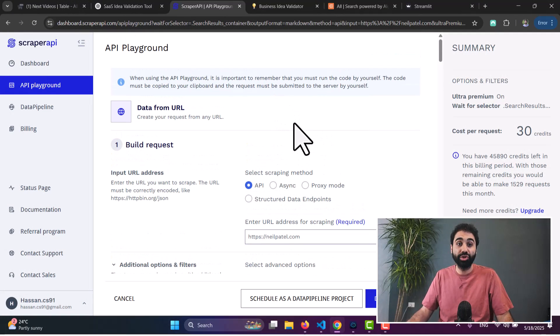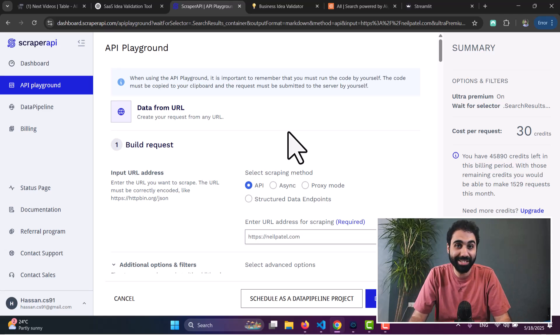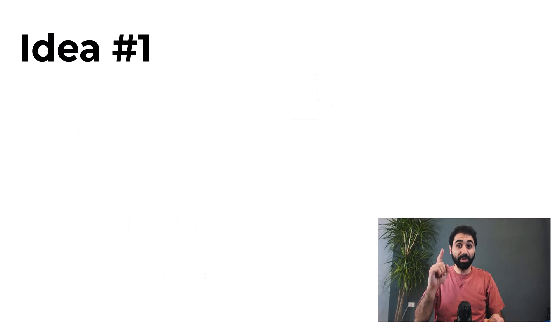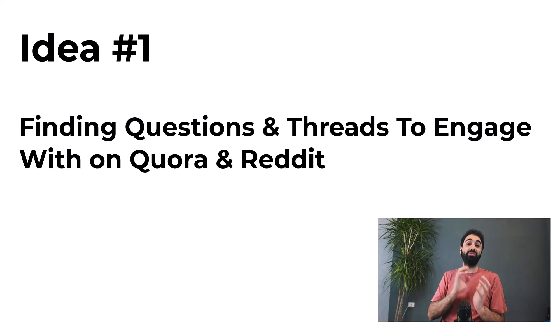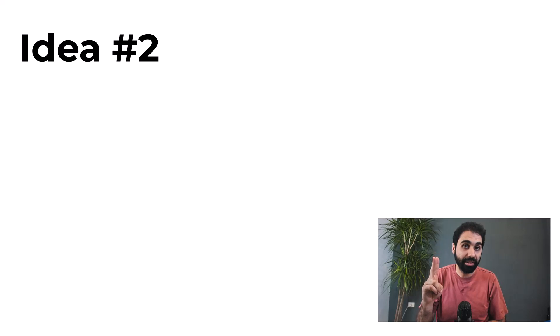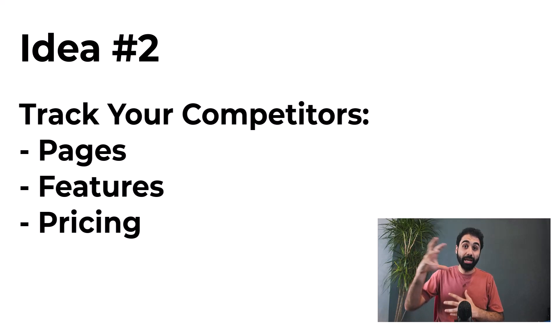While building this tool and testing Scraper API, I got some ideas I want to share — these could be your next successful business. Scraping plus AI today is the new gold mine with unlimited possibilities. The first idea: solve the problem of finding which questions and posts to engage with on Quora and Reddit. Many people struggle to find the right threads for awareness, and with scraping and AI you can do this easily. The second idea: track your competitors — scrape their website daily or weekly to monitor pricing, features, and updates.